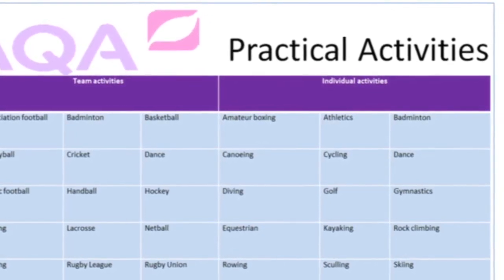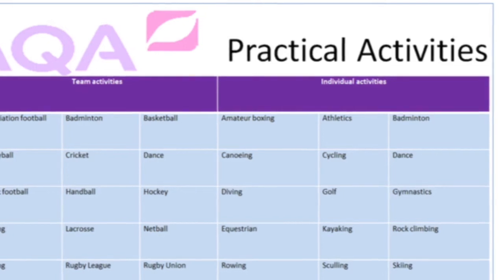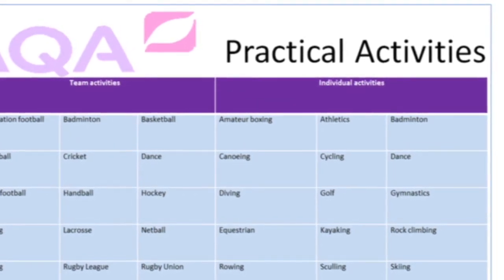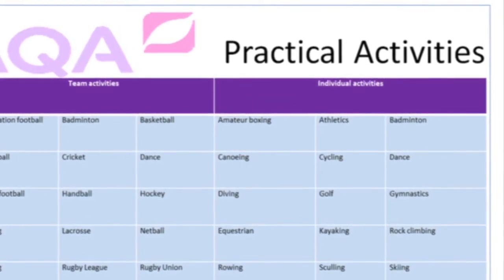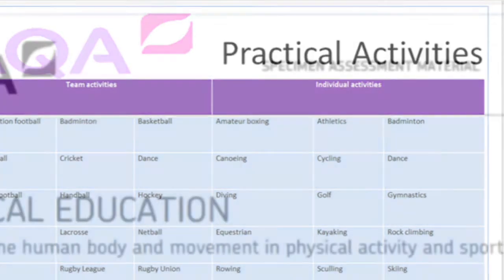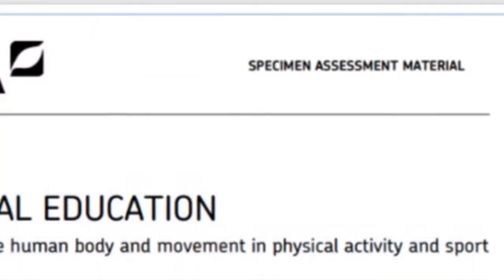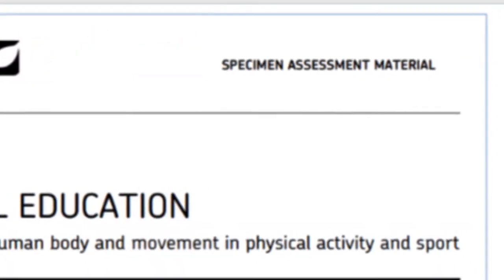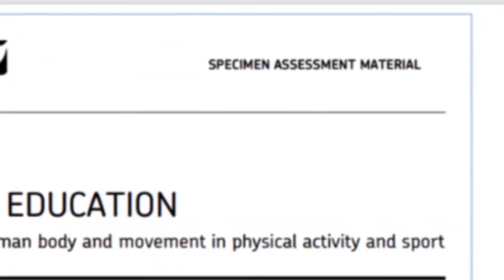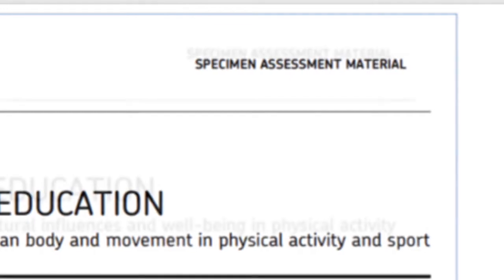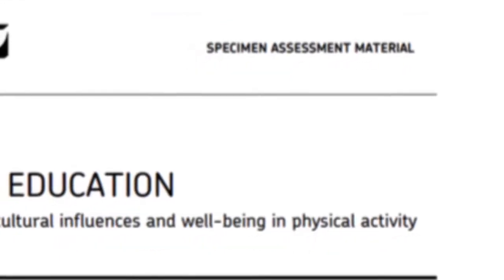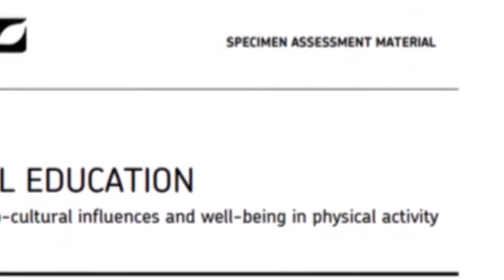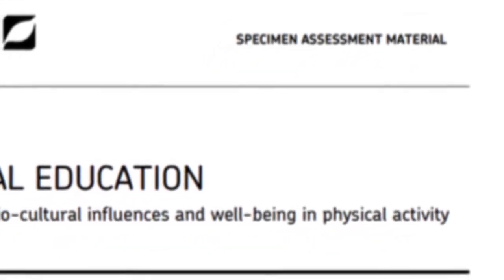Moving on to the examination. There are two separate papers that you sit at the end of Year 11, and each one is worth 30%. The first paper looks at the human body and physiology. The second paper is focused around sociology and sports psychology.